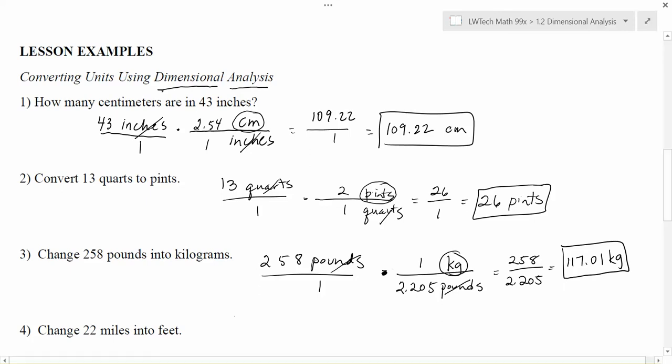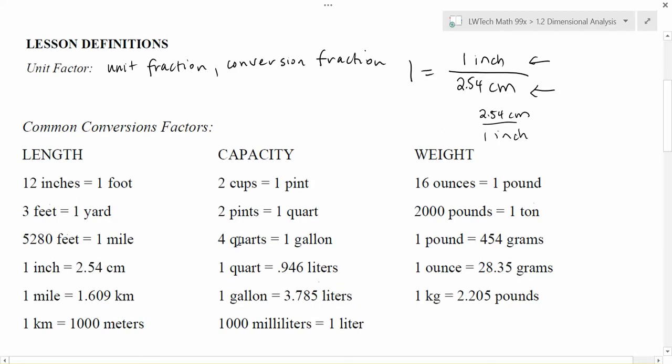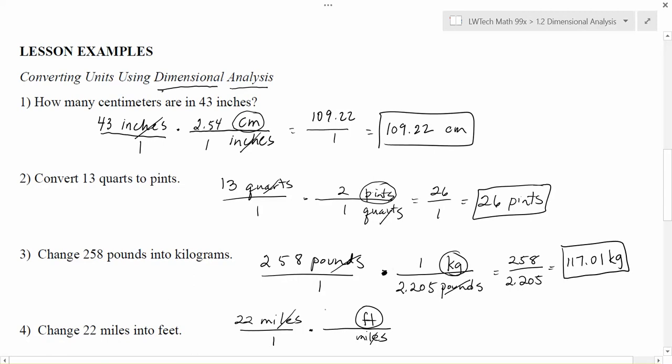For the last one here, we've got 22 miles and we'd like to change that into feet. So think of that as 22 on the top. I want to change between miles and feet. Miles needs to cancel, so it has to be on the bottom for that to work out. And then I want to change to feet. Notice that that will get the miles to cancel and my feet to be left behind. If you don't know the number of feet in a mile, we can check our conversion chart. Here we have 5,280 feet and one mile.